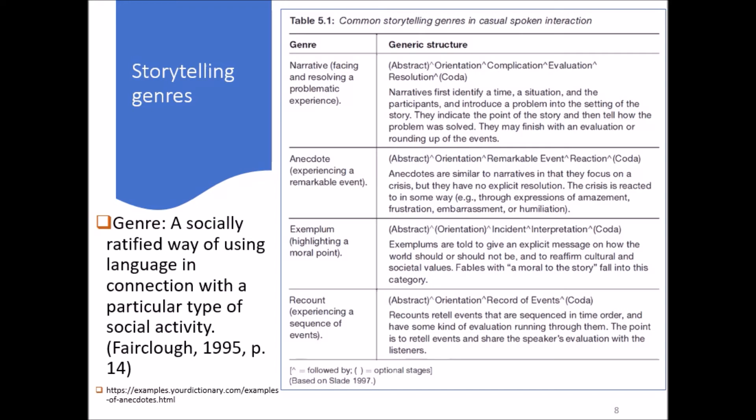Exemplum has these four stages: abstract, orientation, incident, and interpretation. Of course, it could also have a conclusion. Exemplums are told to give an explicit message on how the world should or should not be, and to reaffirm cultural and societal values. For example, fables with a moral to the story fall into this category.